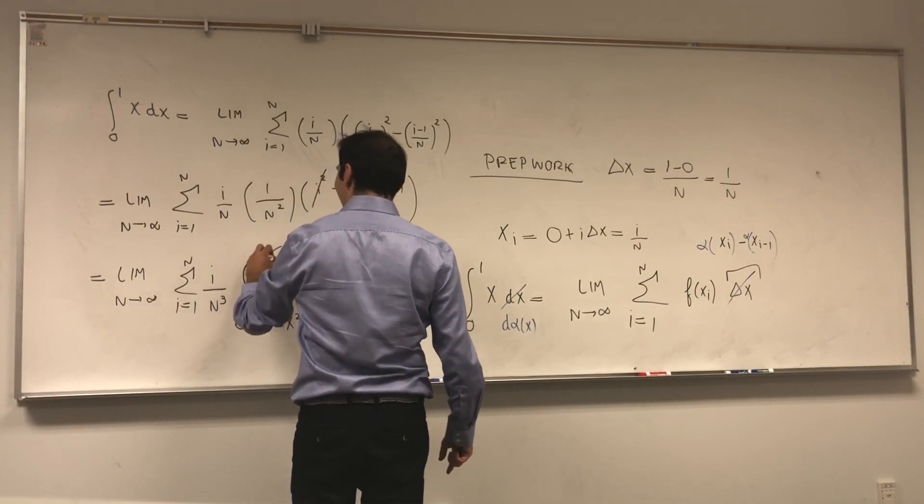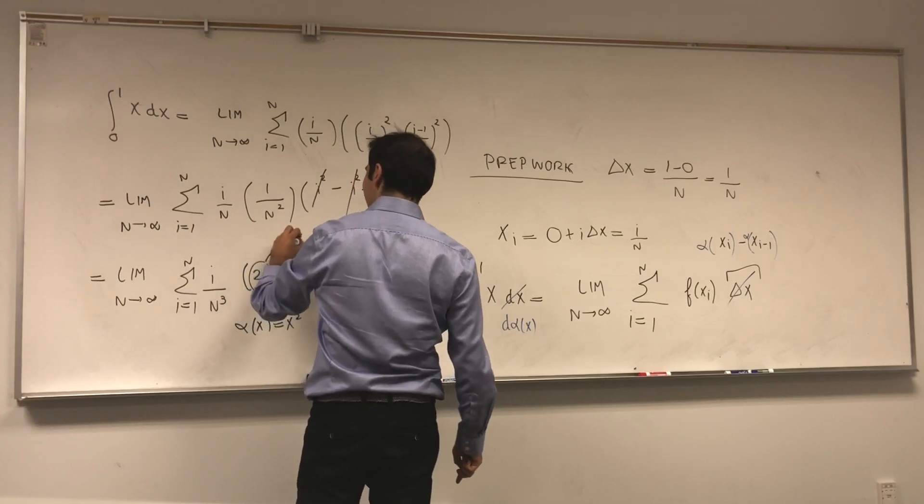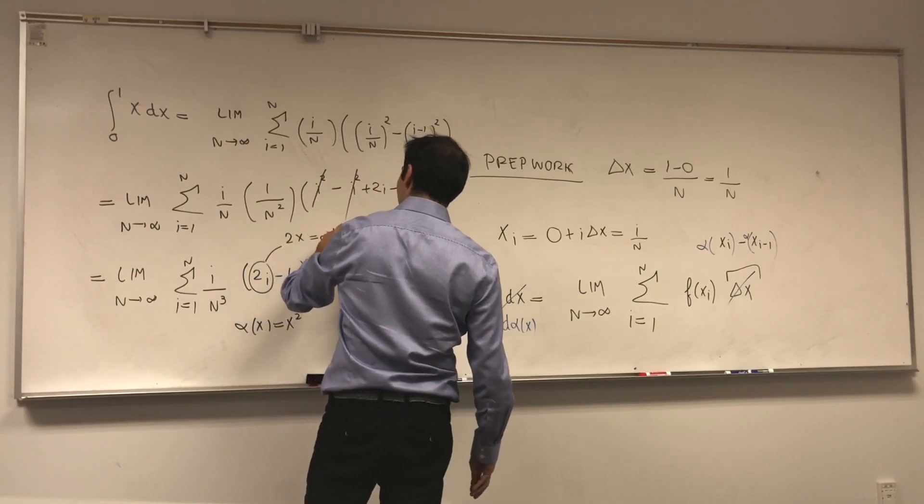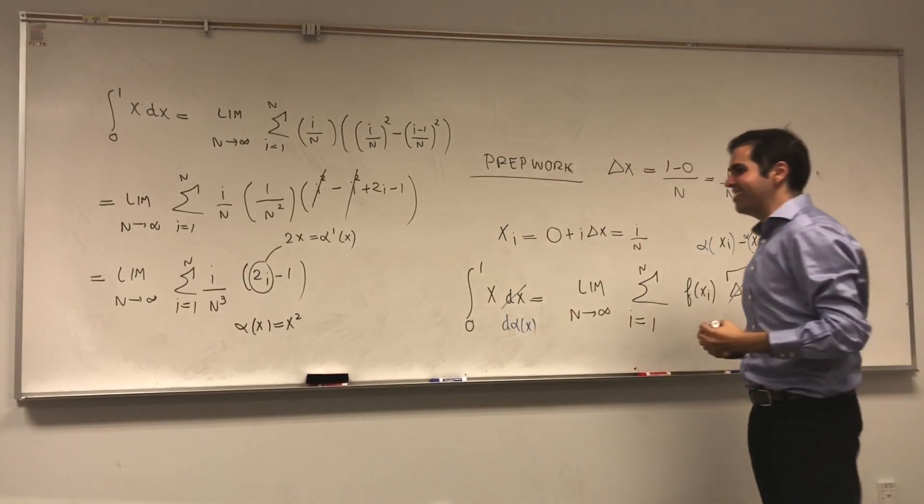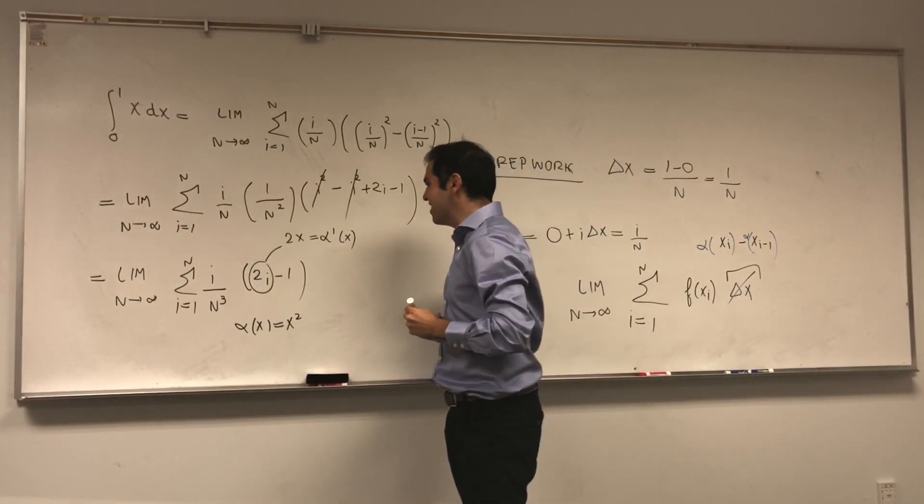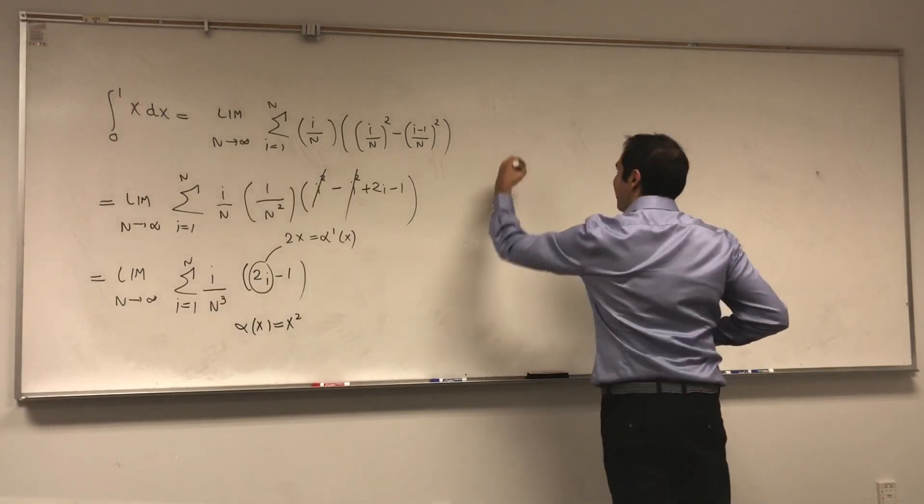Well, this 2i is like a 2x, which is alpha prime of x. And I will remark on this at the end because turns out there's an easier way of doing Stieltjes integrals. Let's expand that out.